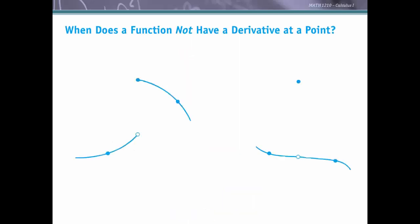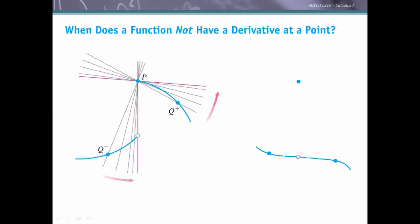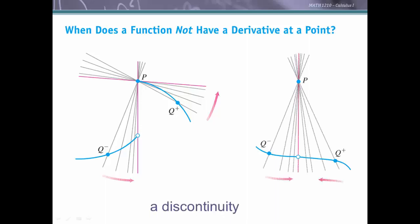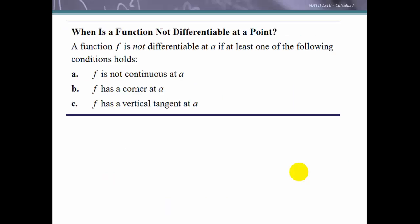As already established, not continuous means not differentiable. For a jump discontinuity, the slopes of secant lines from the left versus the right do not agree, so the limit as h approaches 0 of the difference quotient does not exist at that point, and the derivative does not exist. Similarly, at an isolated discontinuity where the function is defined at an unexpected value, the secant line slopes approach an undefined slope, confirming the derivative does not exist at a point of discontinuity.